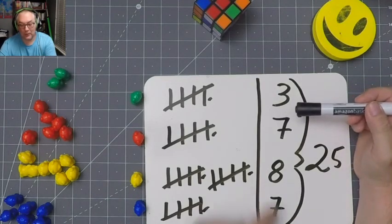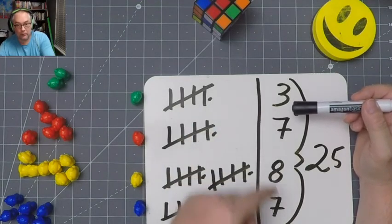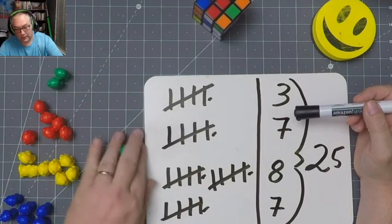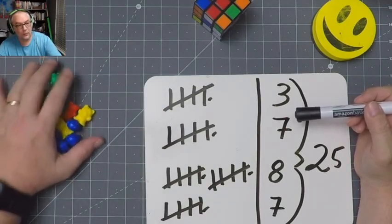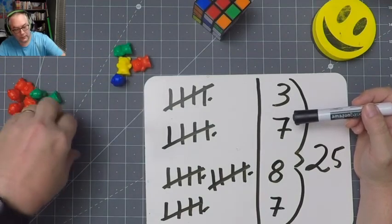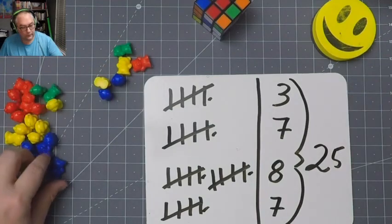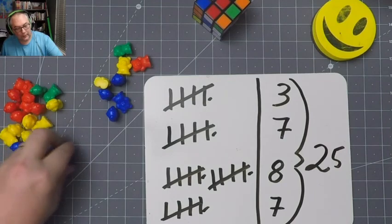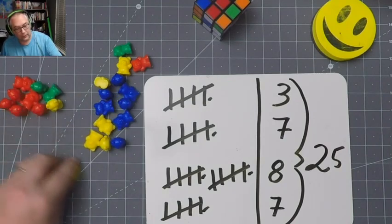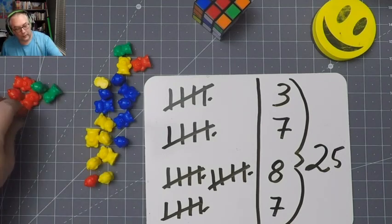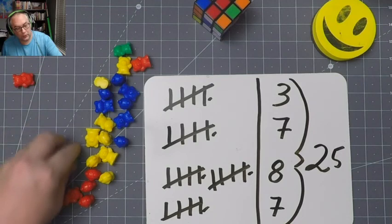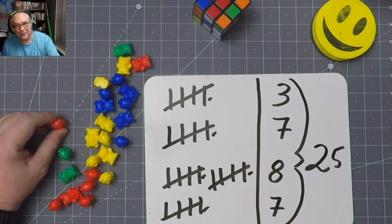Now that was pretty cool because in my head I was moving those numbers around. Watch this. Let's just count all of these bears. Now we're going to count in here. 1, 2, 4, 6, 8, 10, 12, 14, 16, 18, 20, 22, 24, and one more, 25.